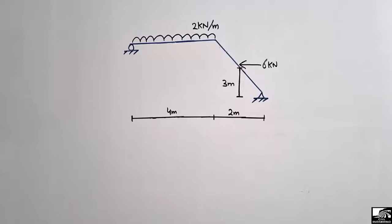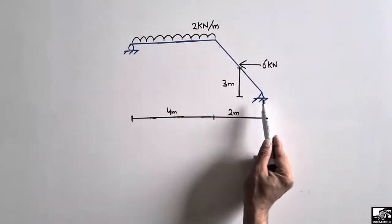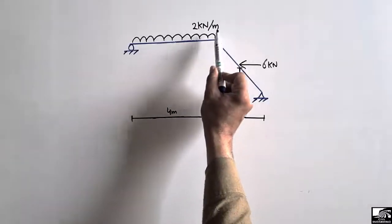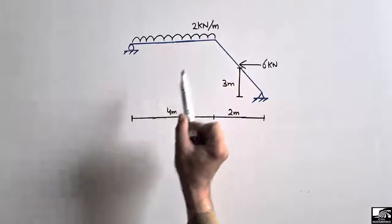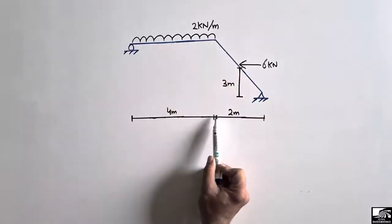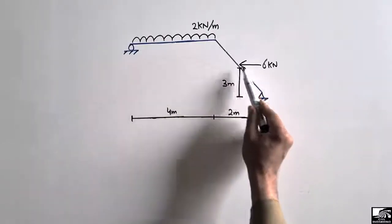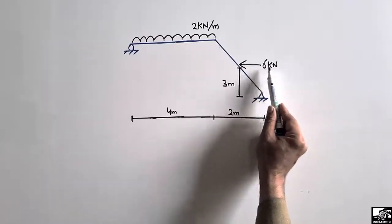Hello guys, welcome back to E7 Engineering YouTube channel. Please subscribe to our channel. In today's lecture, we are going to find out the support reactions for this inclined frame. The load acting on the beam is 2 kilonewton per meter — a distributed load acting over a distance of 4 meters. There is also a lateral load acting on the inclined member of the frame which is 6 kilonewton.